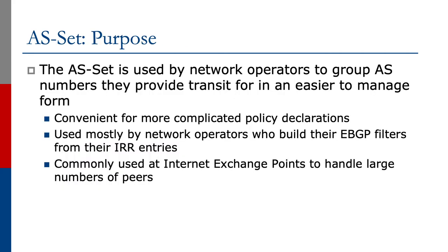The final object we're going to look at is the AS set. The AS set is referenced in the AS object and is used by network operators to group AS numbers they provide transit for in an easier-to-manage form. It's convenient for more complicated policy declarations and is used mostly by network operators who build eBGP filters from the IRR entries. It's commonly used at internet exchange points to handle large numbers of peers.